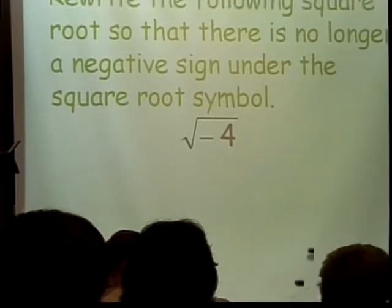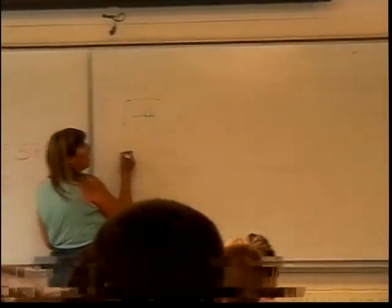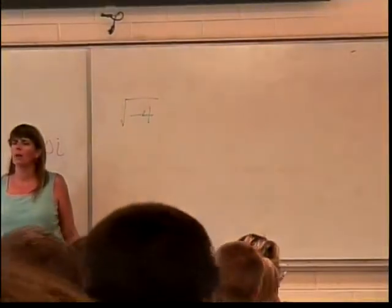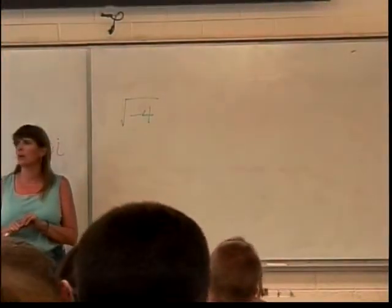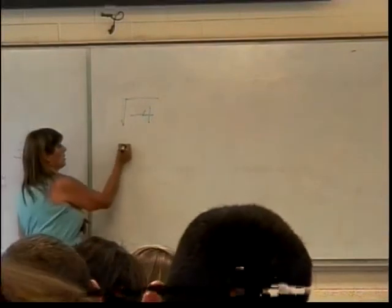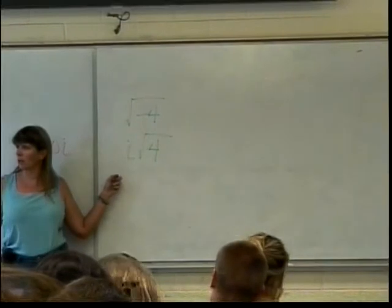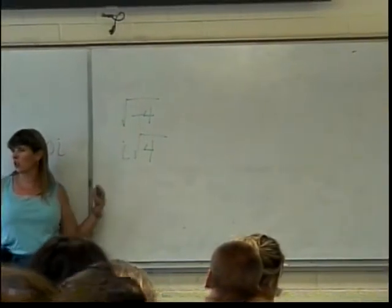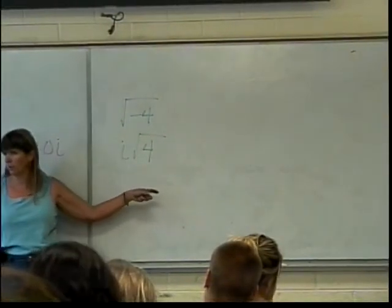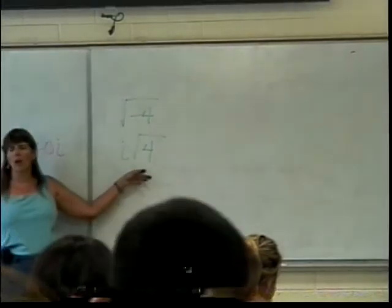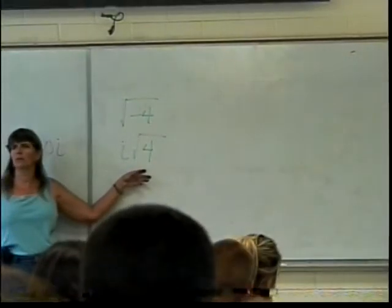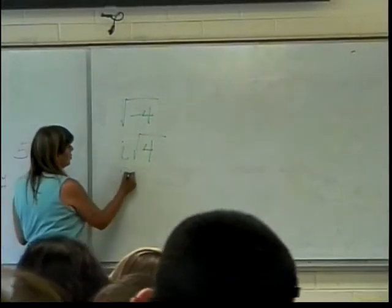So the square root of negative four. Where do I put the i? Is it under the square root sign or outside? The i goes outside the square root sign. I always put mine in front because I want to make sure it doesn't look like it's under the square root symbol. And then I can deal with the square root of four. What's that? Two. So this is just two i.